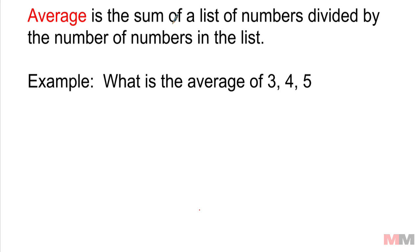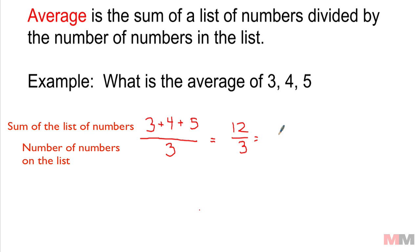Average is just the sum of a list of numbers divided by the number of numbers in that list. Let's take this really easy one as an example. The sum means to add them all up: 3 plus 4 plus 5, divided by the number of numbers in that list. There's three numbers on this list, so I'm going to divide this by 3, and I get my average. 3 plus 4 plus 5 is 12 divided by 3, which is 4.